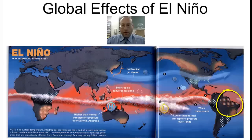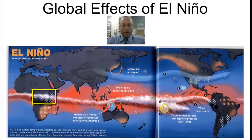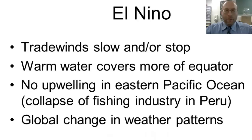Over here where Peru is, we'll find rains where before it was dry, and because the water is so warm, there's no upwelling of cold water, so the fishery industry will collapse. In the area of Brazil, it's going to be drier. The southeastern United States is wetter, and the jet stream over North America is lower, bringing colder temperatures for us in New York. In equatorial Africa it tends to be wetter than normal, and in southeastern Africa it's drier than normal.